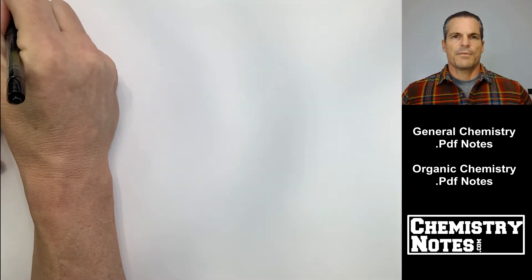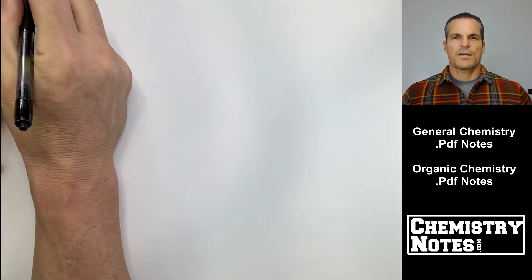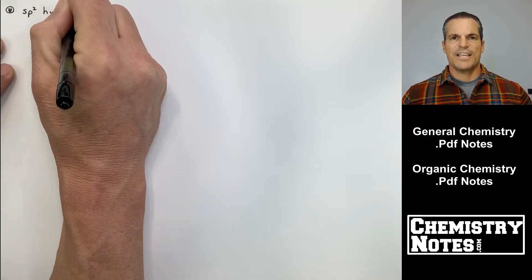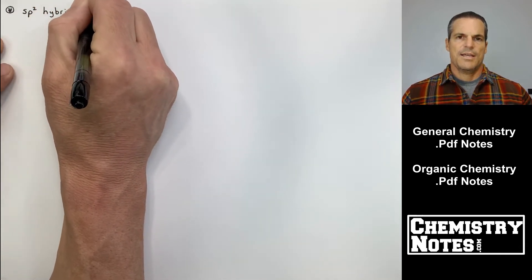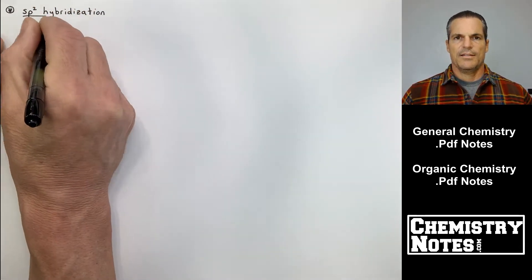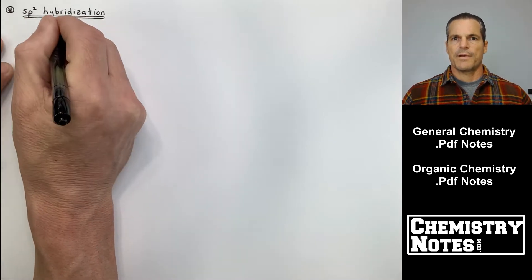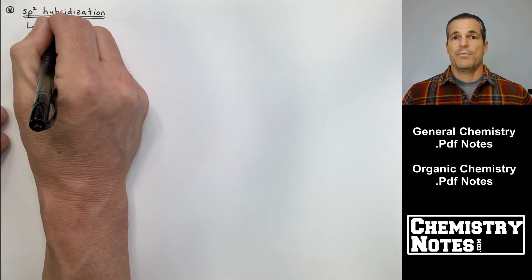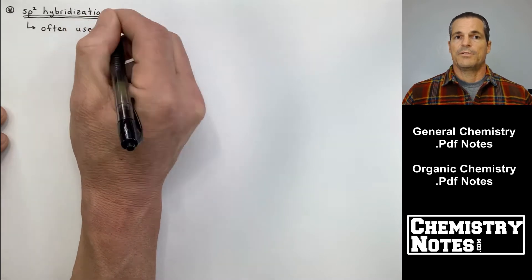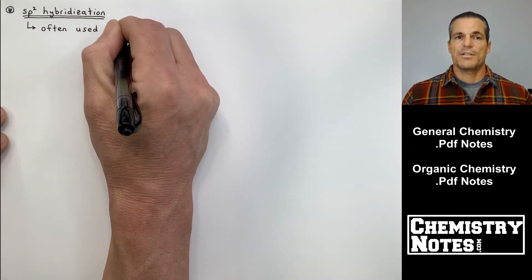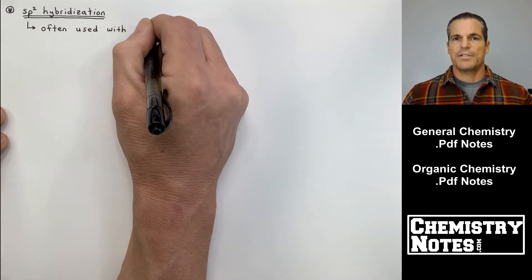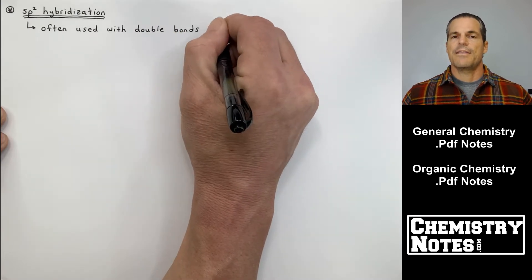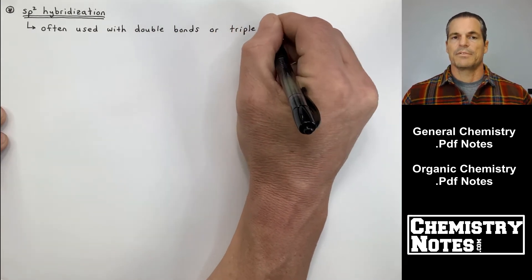Hi guys, Justin here from chemistrynotes.com and today we're continuing with hybridization and hybrid orbitals. At the end of the last video we talked about sp3 hybridization, and today we're going to continue with sp2 hybridization, then sp hybridization, then dsp3, and finally d2sp3 hybridization.